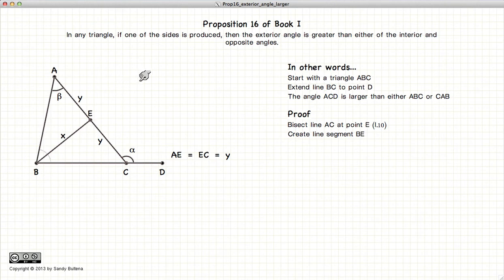Extend that line further out, and using a circle, define a point F such that BE is equal to EF. Connect the point CF.